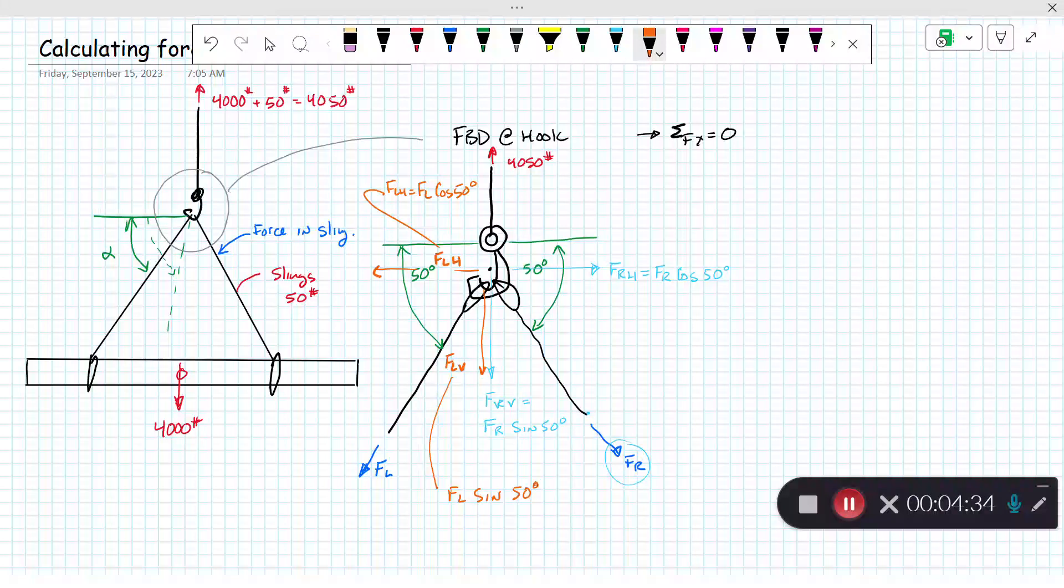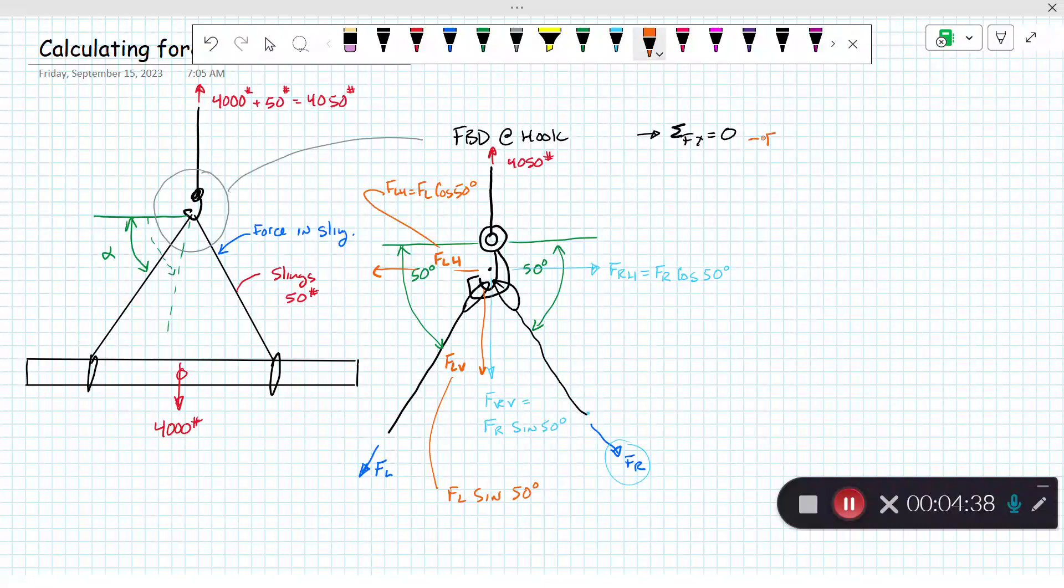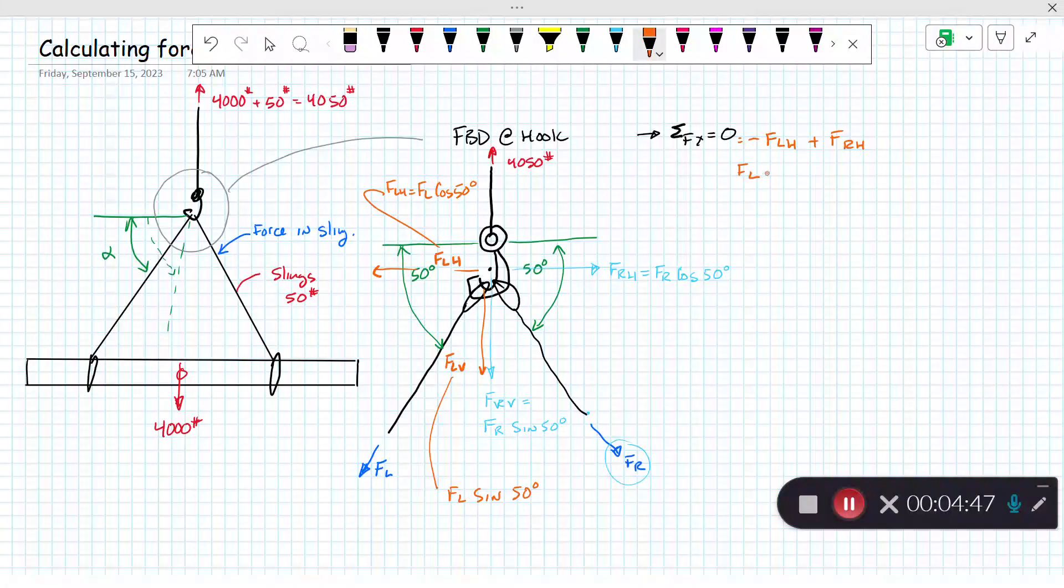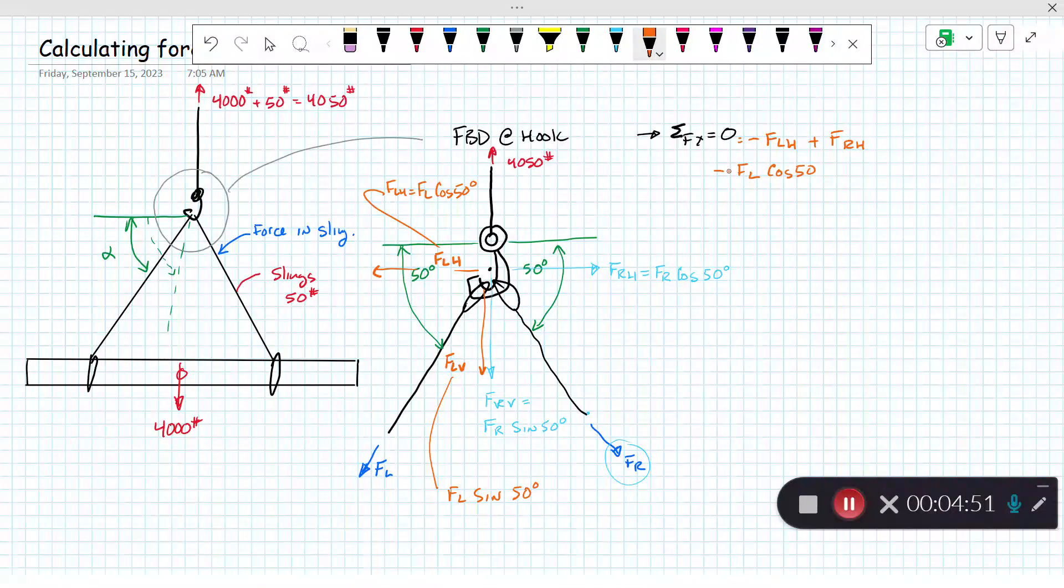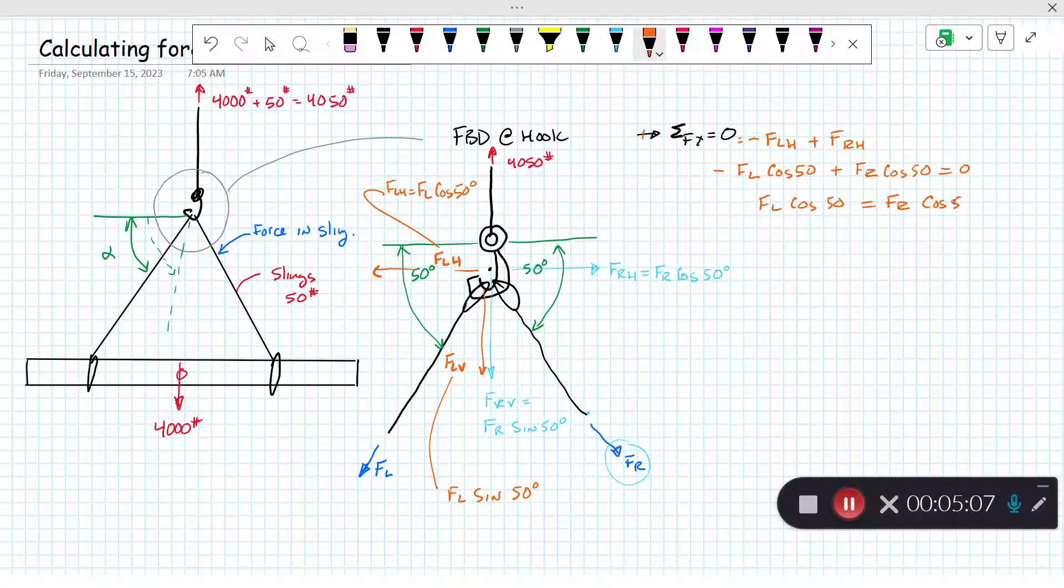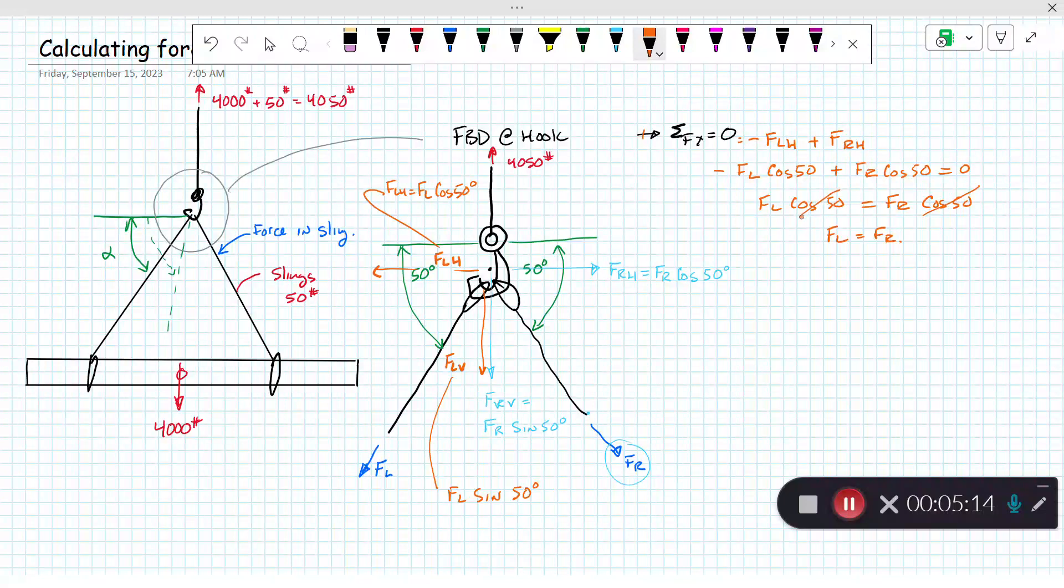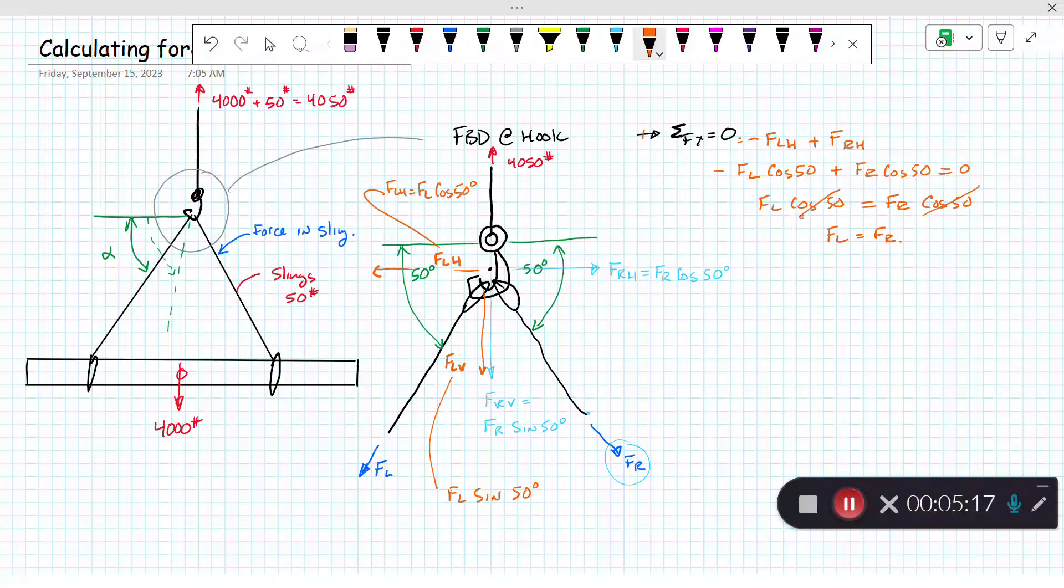Now we can do our summing of the horizontal forces. I have a negative FLH and a positive FRH. We substitute them in: negative FL cosine of 50 plus FR cosine of 50, and that sums to zero. So FL cosine of 50 equals FR cosine of 50, or FL equals FR, which is what we expected. The forces in the two sides will be equal if the angles are equal.